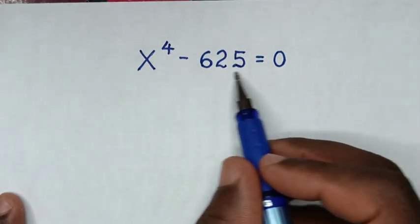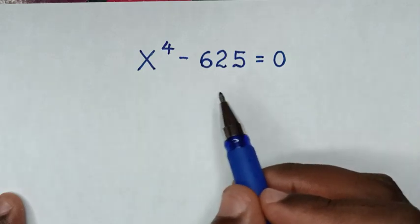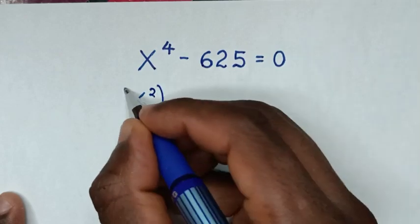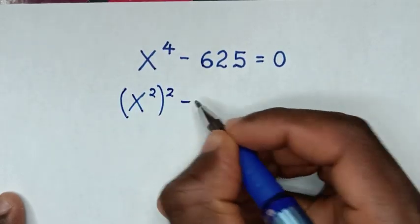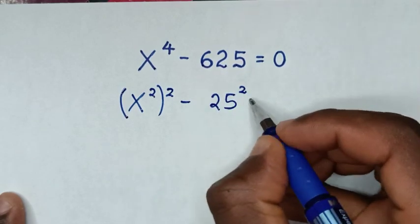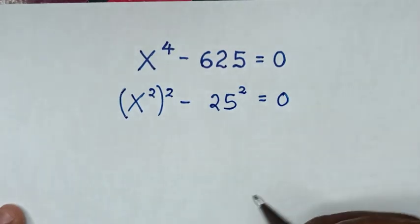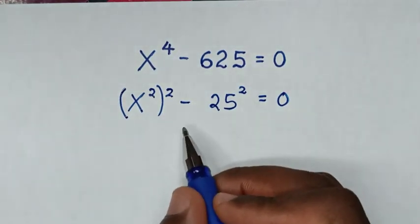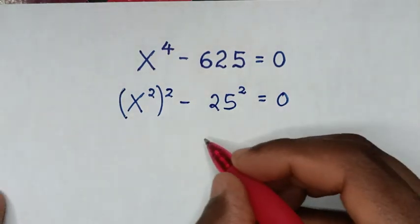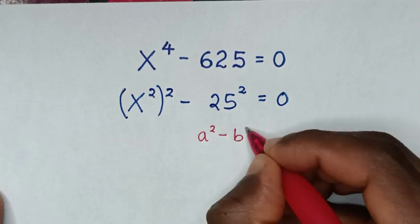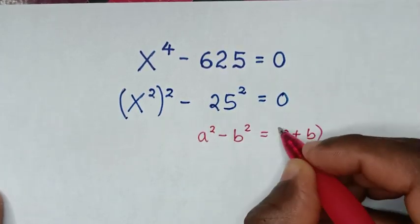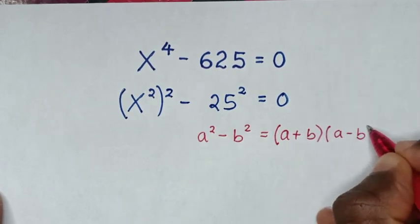So we rewrite the left side in the form of a perfect square. So x to the power 4 can be written as (x squared) squared, and 625 can be written as 25 squared, giving us (x squared) squared minus 25 squared equals 0. This is in the form of a difference of squares, so we apply the rule: a squared minus b squared equals (a plus b)(a minus b).